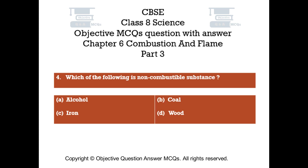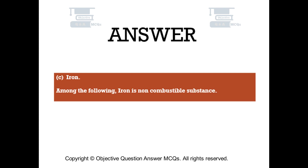Question number 4. Which of the following is a non-combustible substance? Option A Alcohol, Option B Coal, Option C Iron, Option D Wood. The right answer is Option C — Iron. Among the following, iron is a non-combustible substance.